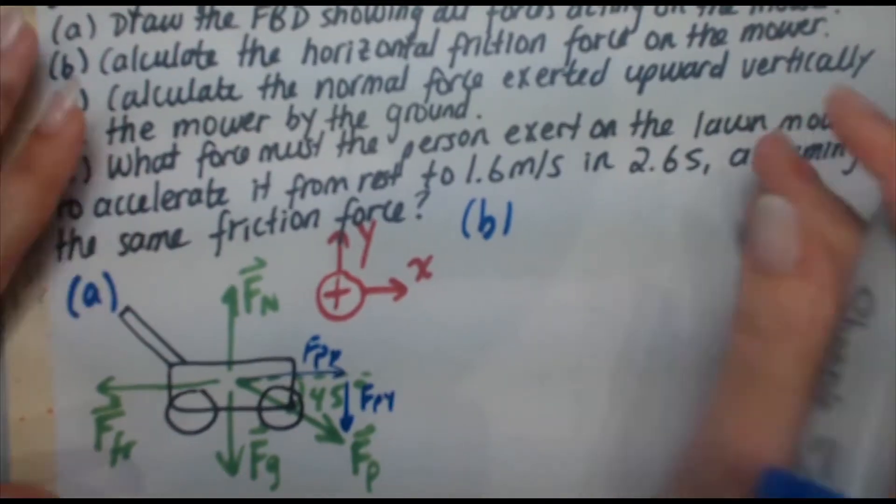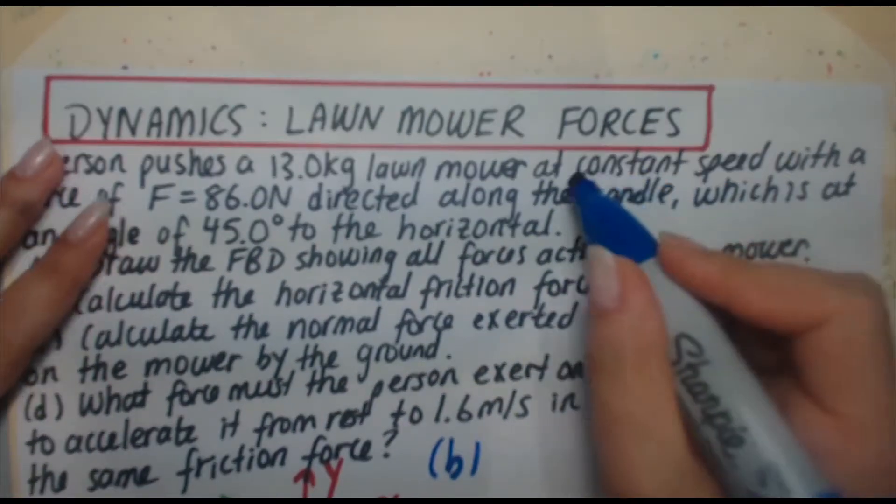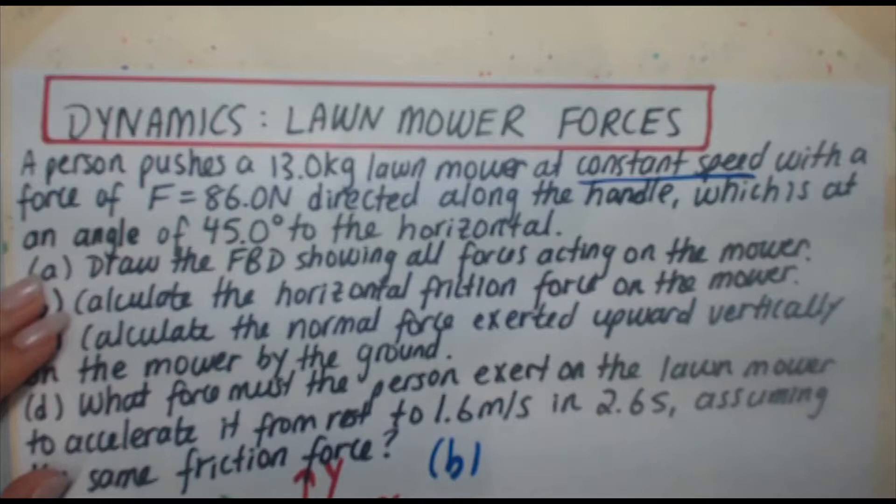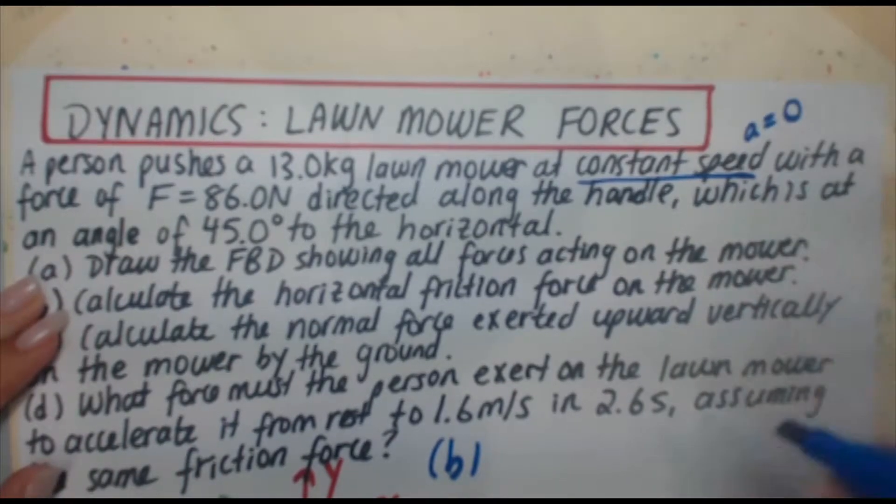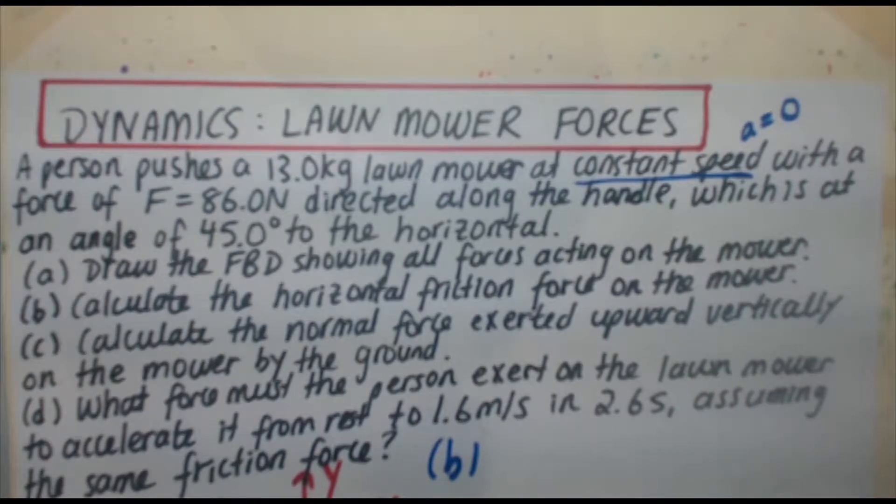So this is in the positive x direction, whereas friction is in the negative x direction. Okay, so here's the thing also. In the question, we're told the lawnmower is moving at constant speed. Big trigger word there.